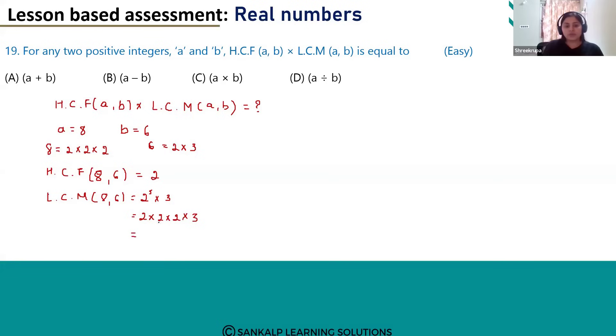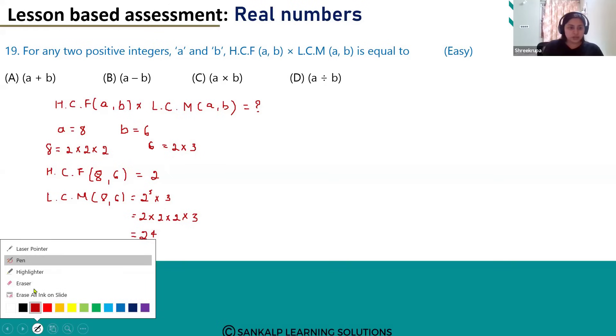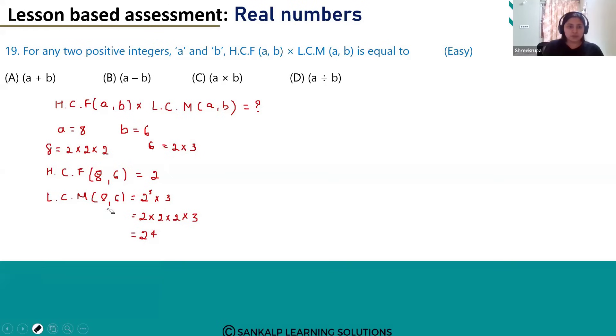So 2 times 2 is 4, 4 times 2 is 8, 8 times 3 is 24. Now let's substitute these values in the equation. HCF is 2 and LCM is 24.